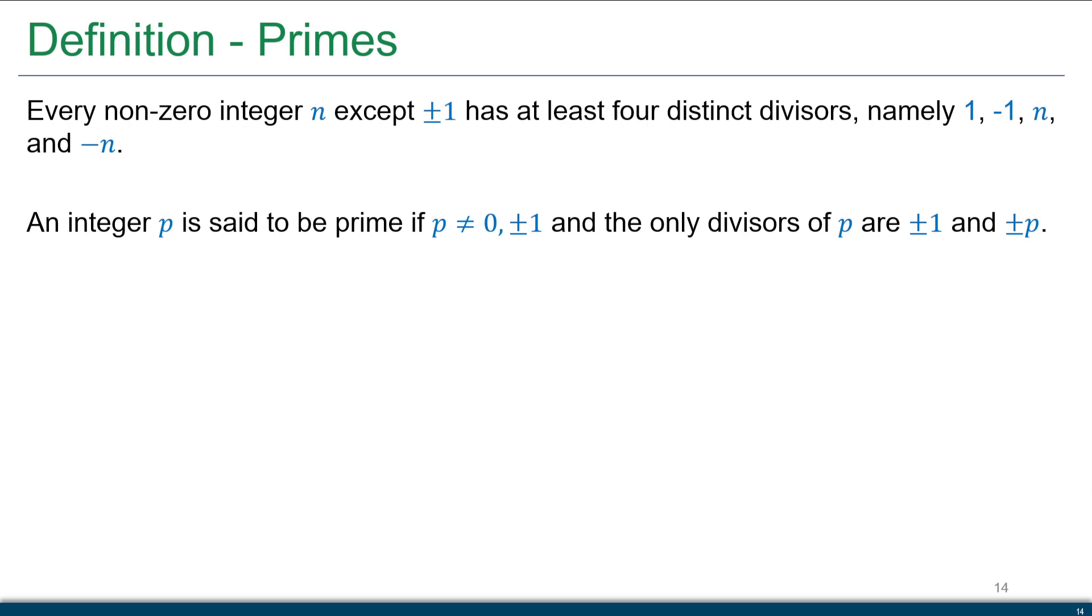So we say an integer p is said to be a prime if p is not equal to zero or plus or minus one, and the only divisors of p are in fact plus or minus one and plus or minus p. So really, the only thing that divides it is one and itself, but we're also saying it could be negative one or negative itself.